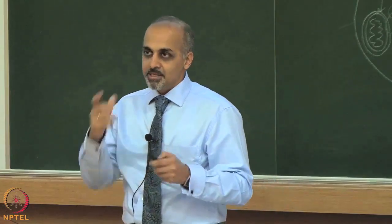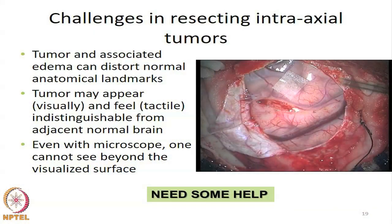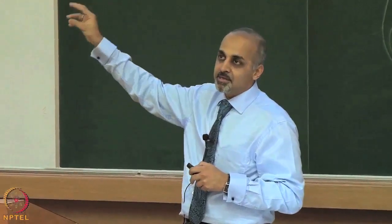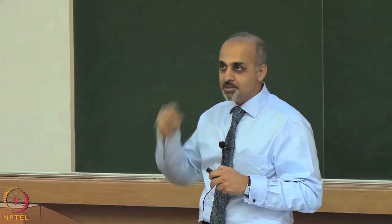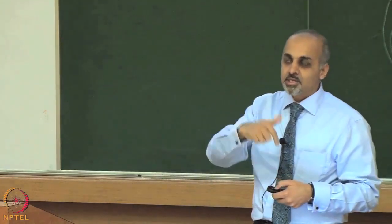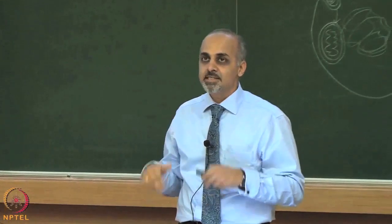The core problem is that you cannot distinguish where the tumour ends and where normal brain starts. In surgery, for example, when operating near the motor area — which controls the opposite half of the body — there is no way to tell what is tumour and what is normal brain. We need certain tools, and this is where technology has gone a long way in making safe and radical surgeries possible.